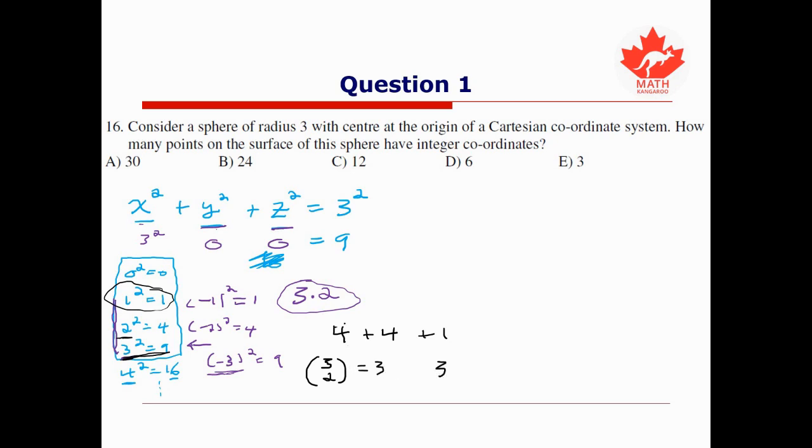So for our total count, we have 3. But then any one of these variables could be positive or negative. So here we could choose a plus or minus 2. Here we could have chosen plus or minus 2. And here we could have chosen a plus or minus 1. So we need to multiply by 2 for each of those cases, 2 × 2 × 2, for a total of 24 possibilities in this case.